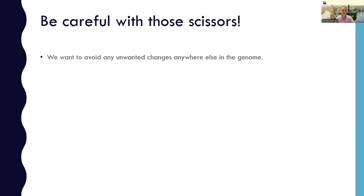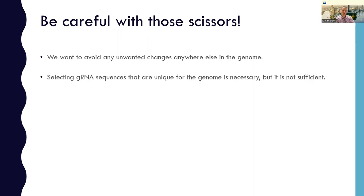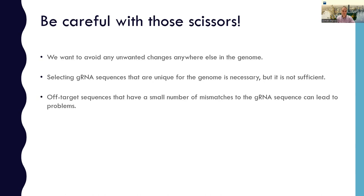The motivation here is that we want to avoid any changes elsewhere in the genome. There is one gene or one region in the genome that we do want to modify, but we don't want to modify anything else. A key requirement to achieve that is that we want to select guide RNA sequences that are unique for the genome that we target. If the sequence is not unique, by definition, it's going to target multiple regions in the genome. So that's a key requirement, but it is not sufficient. It is well established that sequences that have a small number of mismatches compared to the guide can still lead to problems.